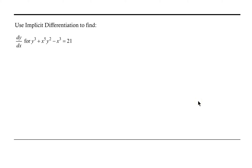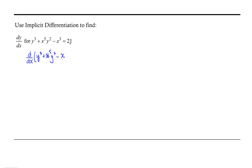Welcome. Let's take a look at using implicit differentiation to find dy/dx for the equation y cubed plus x to the fifth y squared minus x cubed equals 21. Our general strategy for implicit differentiation is to take the derivative with respect to x of both sides of our equation. So we'll do d/dx of y cubed plus x to the fifth y squared minus x cubed equals the derivative with respect to x of 21.